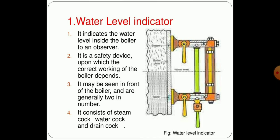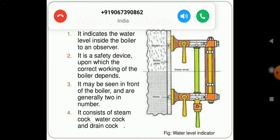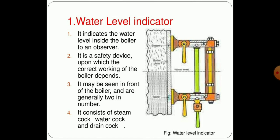The water level indicator indicates the water level inside the boiler to the observer. It is a safety device upon which the correct working of the boiler depends. It may be seen in front of the boiler and are generally two in number. It consists of steam cock, water cock, and drain cock.